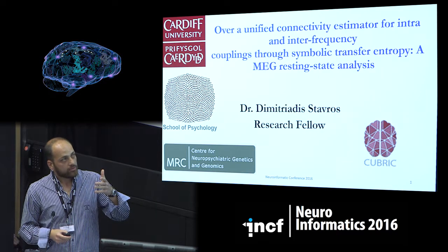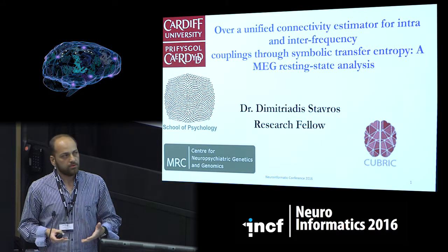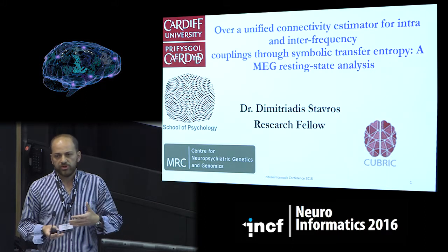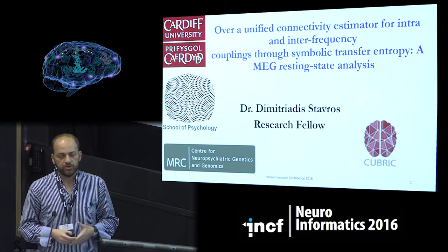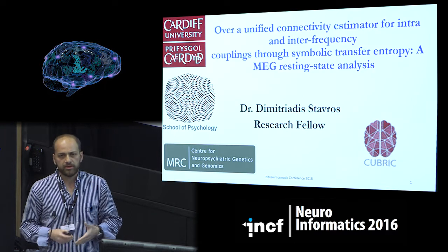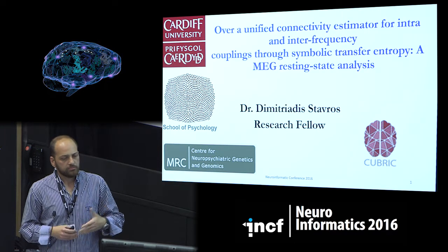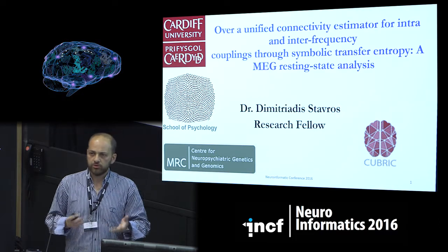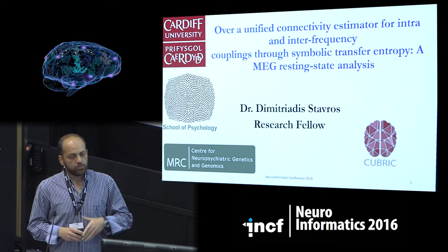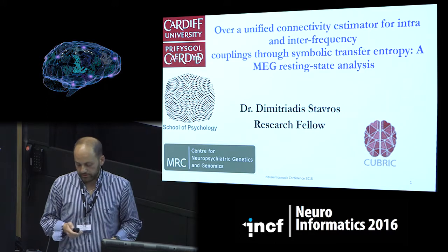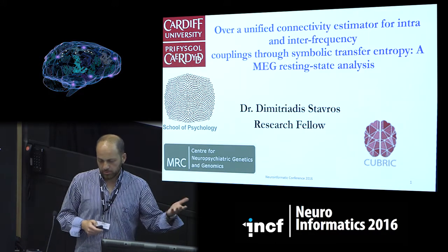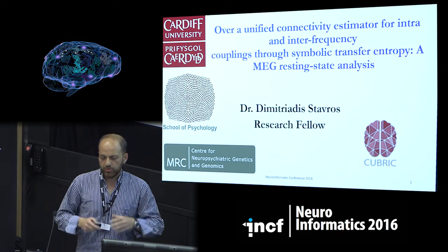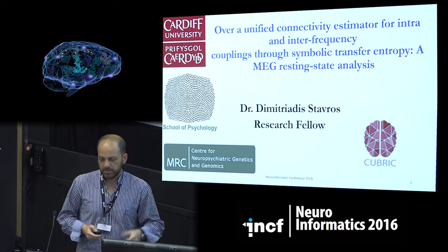I'm working on how we can define one connectivity estimator that can quantify different types of interactions that co-exist in the human brain using electromagnetic recordings, and how we can incorporate different frequencies, inter-frequency coupling, cross-frequency coupling, with amplitude domain and phase domain. This will be my first attempt to incorporate all this information into one single estimator.